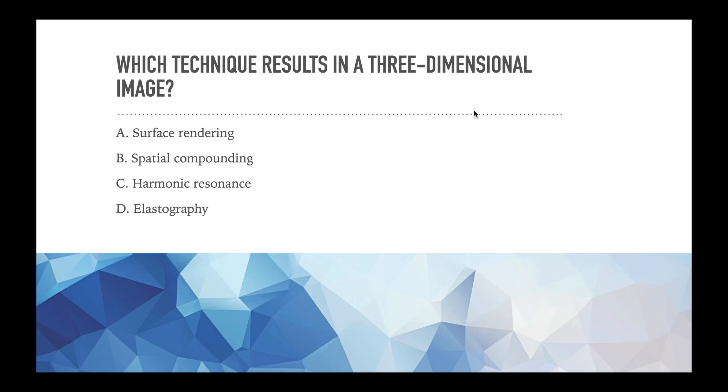So if we look at the four options that we have: surface rendering, spatial compounding, harmonic resonance, elastography, which of these would give us a three-dimensional image? I'm not going to go in order, but I want to talk about a couple of these. The last one, elastography, that is typically you want to associate elastography with one other word, and that word would be stiffness.